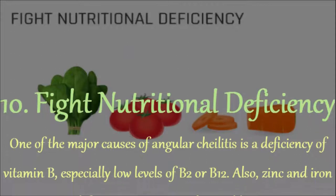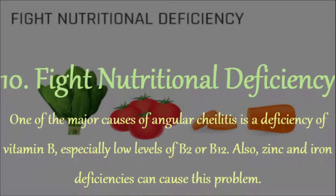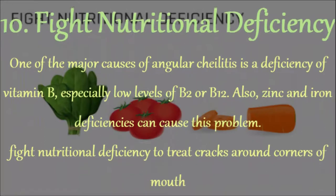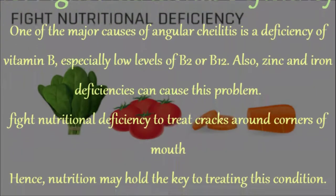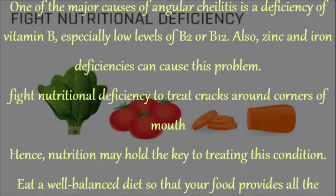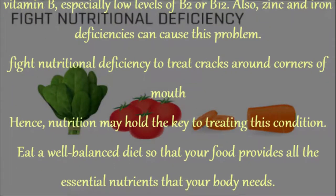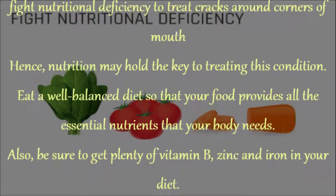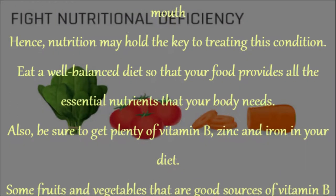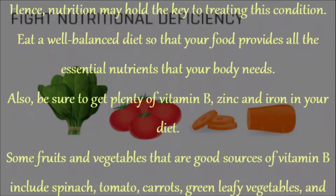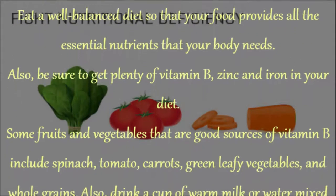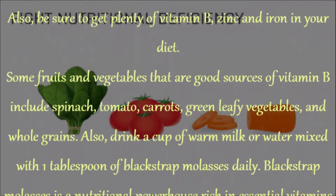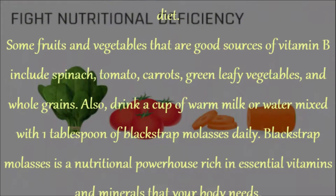10. Fight Nutritional Deficiency. One of the major causes of angular cheilitis is a deficiency of vitamin B, especially low levels of B2 or B12. Zinc and iron deficiencies can also cause this problem. Eat a well-balanced diet so that your food provides all the essential nutrients your body needs. Be sure to get plenty of vitamin B, zinc, and iron in your diet. Some fruits and vegetables that are good sources of vitamin B include spinach, tomato, carrots, green leafy vegetables, and whole grains. Also, drink a cup of warm milk or water mixed with one tablespoon of blackstrap molasses daily.